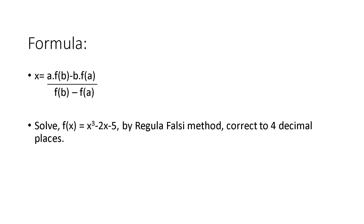The formula for the Regula Falsi method is: x is equal to a into f(b) minus b into f(a), divided by f(b) minus f(a). This formula is used for solving the Regula Falsi method.